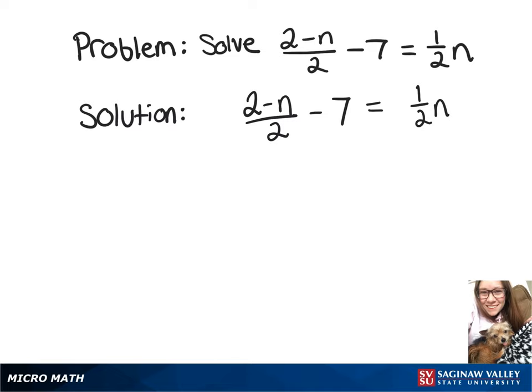In this video, we're going to solve (2 - n)/2 - 7 = (1/2)n.